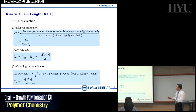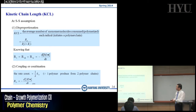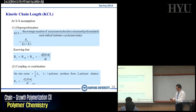In the disproportionation case, you have the rate of polymerization divided by the rate of termination. The rate of termination is defined as the total rate of termination due to disproportionation plus rate of termination done by coupling. In the case of coupling, we have defined half of KTC because you have two chains in the case of coupling.